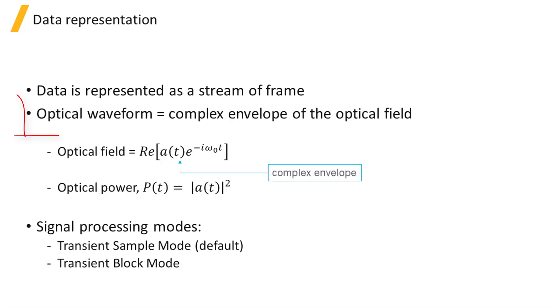For optical signals, a block of samples constitute a waveform where the waveform defines the complex envelope of the optical field. Here, the carrier frequency, omega naught, is the center frequency of the simulation band. The optical power is the absolute value squared of the complex envelope.